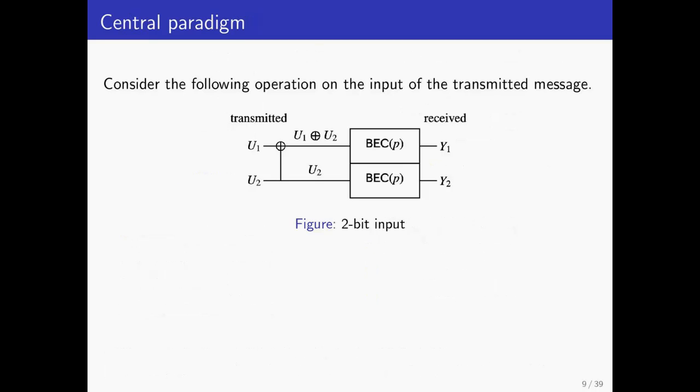With some background setup, let us dive into channel polarization. As an example to motivate the notion of polarization, let's consider a 2-bit message U1, U2 transmitted over a BEC. Instead of transmitting the message as it is, let's transmit the first bit as the sum U1 plus U2, and the second bit as just U2 itself, as shown in the figure.